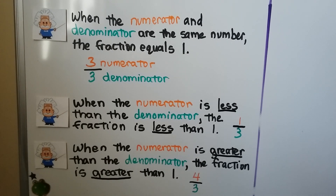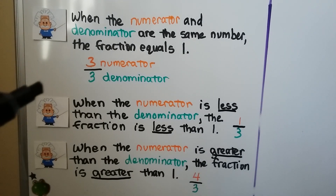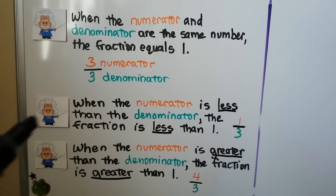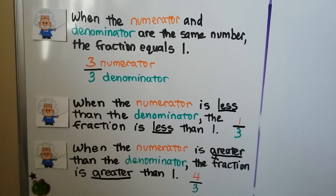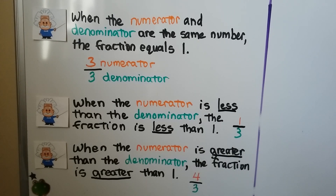When the numerator and the denominator are the same number, the fraction is equal to one — we have three thirds. When the numerator is less than the denominator, the fraction is less than one; here we have one third, it's one part of three parts. When the numerator is greater than the denominator, the fraction is greater than one — here we have four thirds, and that's more than three thirds.